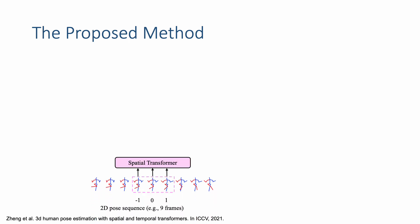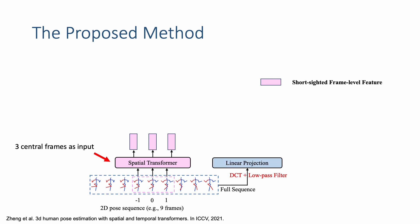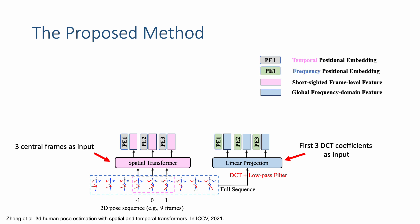We limit the spatial transformer to see only a few central video frames to get frame level representations. For long-term temporal modeling, we apply linear projection to the low-frequency DCT coefficients of the full sequence to get global features. With modality and positional embedding, the temporal transformer of PoseFormer V1 is reformulated as a time-frequency feature fusion module.